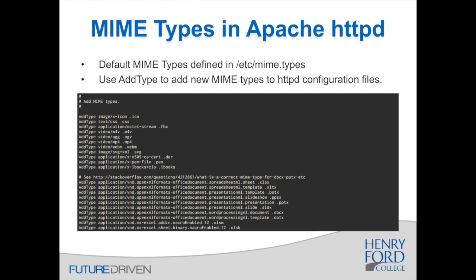Servers ship with some default MIME types, and then in the Apache server, you use AddType to add new MIME types to your own individual configuration files. You don't really want to edit the default MIME types or go in and edit the main file that is for the whole server. You can use the AddType command in your Apache configuration to specify additional file types that you need to include on your server or on a website that you want to be able to download properly.